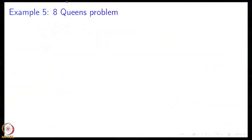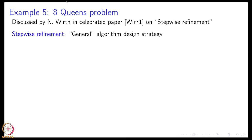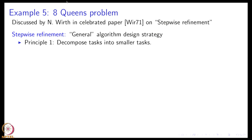My next example is the 8 queens problem. This problem has been discussed by Niklaus Wirth who is another luminary, another forefather of computer science or computer programming. He wrote a celebrated paper on stepwise refinement as long ago as 1971 addressing some of the problems that we are talking about. How do you design programs? What is stepwise refinement? It is meant to be a general algorithm design strategy.